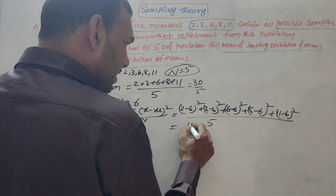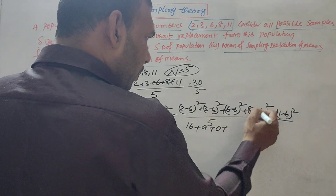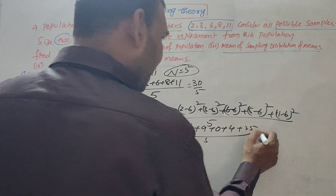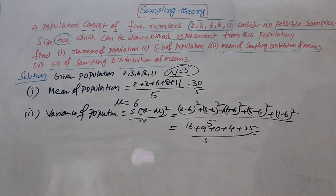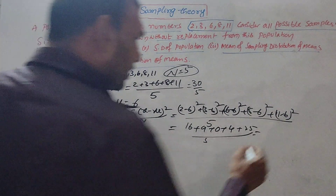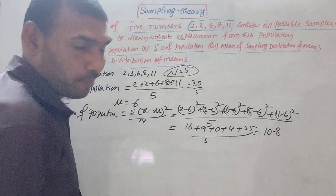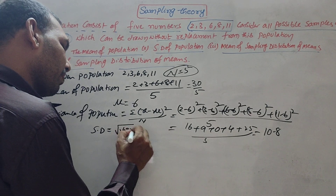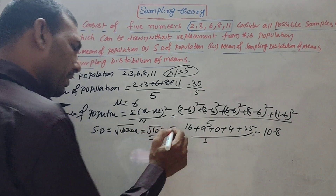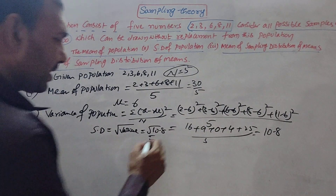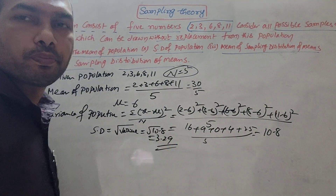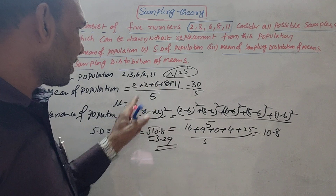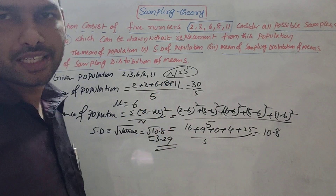Computing each term: (2−6)² = 16, (3−6)² = 9, (6−6)² = 0, (8−6)² = 4, (11−6)² = 25. Adding these and dividing by 5 gives variance of population = 10.8. Then SD = square root of 10.8 = approximately 3.29. With this, the second part is complete.